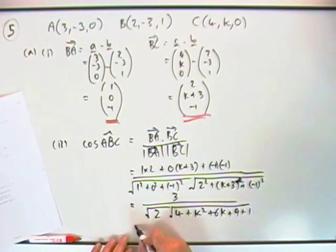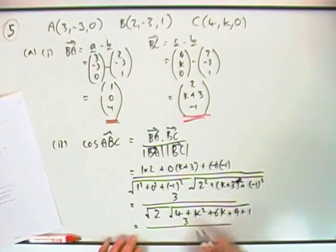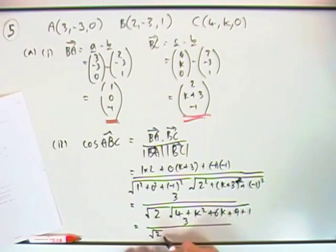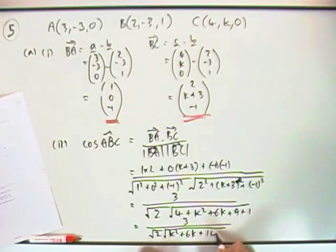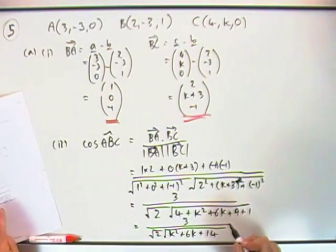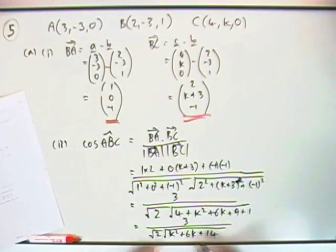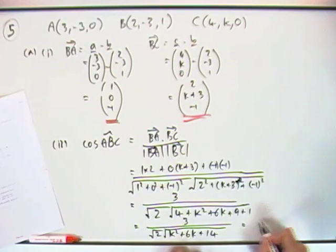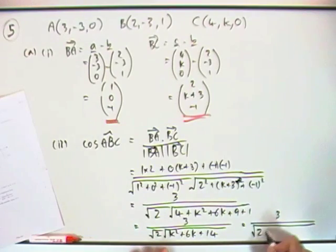So that over root 2 times k²+6k+14. And the last part says show it's equal to that—well you can just absorb the two roots together when you're multiplying, so that's going to equal 3 over one big square root, which will be 2 times (k²+6k+14).